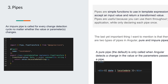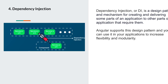I have a video on filter search where I briefly explained pipes and how to use a pipe in a table. Coming to the next topic: dependency injection.